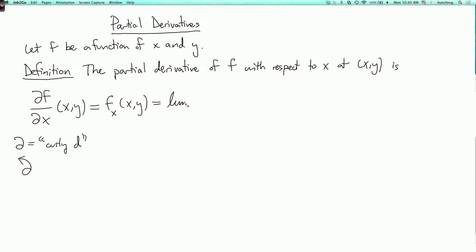This is defined to be the limit as h goes to 0 of f of x plus h comma y minus f of x comma y over h, if this limit exists. If the limit does not exist, then the partial derivative of f with respect to x is not defined at the point xy.